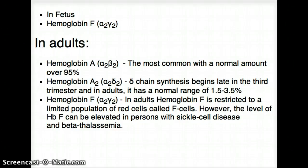In an adult, the most common type of hemoglobin is hemoglobin A. Hemoglobin A has two alpha chains and two beta chains and consists of 95% of all the hemoglobin in an adult. In an infant, it's actually going to be hemoglobin F, which consists of alpha 2 and gamma 2.